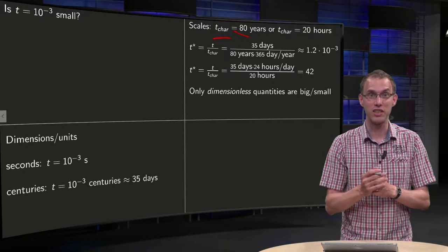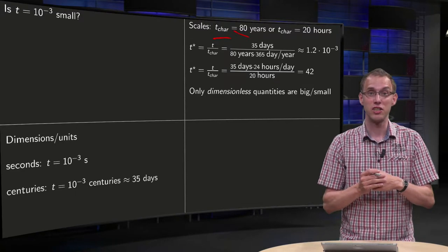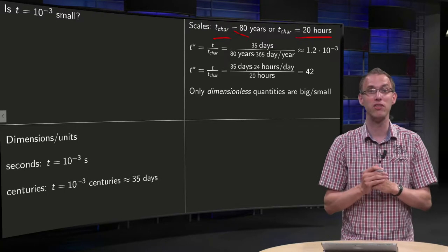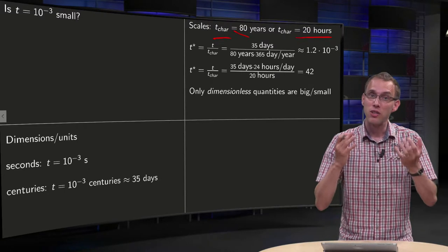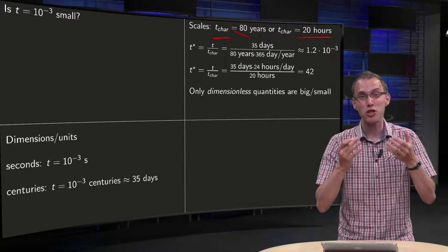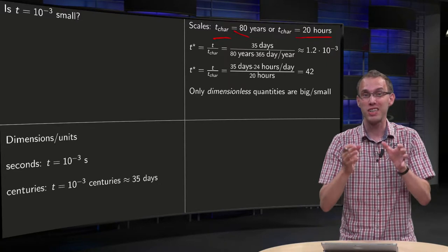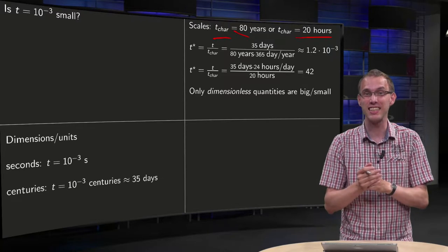or if your characteristic scale is the scale of the lifespan of a fly, a mayfly, which is approximately 20 hours. So if you want to answer the question whether the time is small or large, you always have to do that with respect to some characteristic time scale.